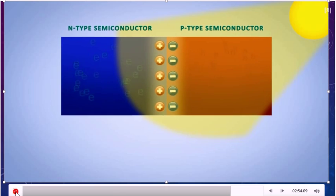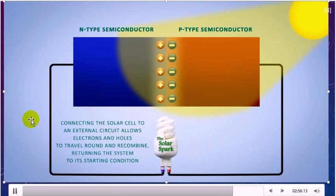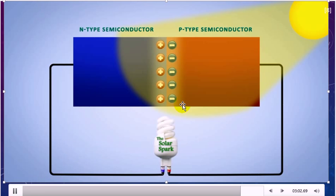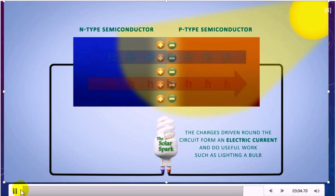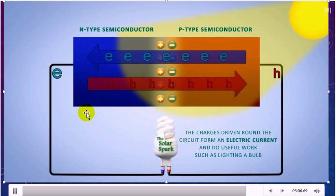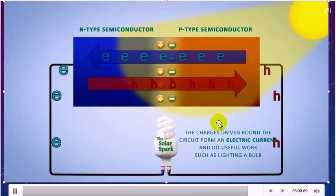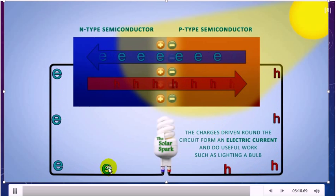When you connect solar cells to an external circuit, it allows electrons and holes to travel around and recombine, returning the system to its starting condition. The charge driving around the circuit forms an electric current and does useful work such as lighting a bulb.